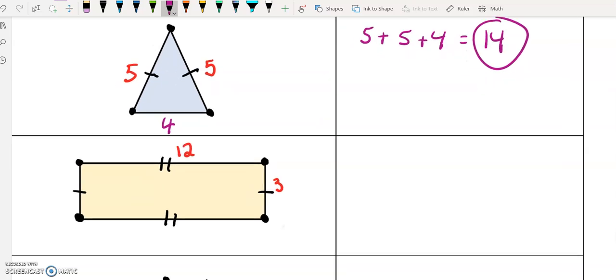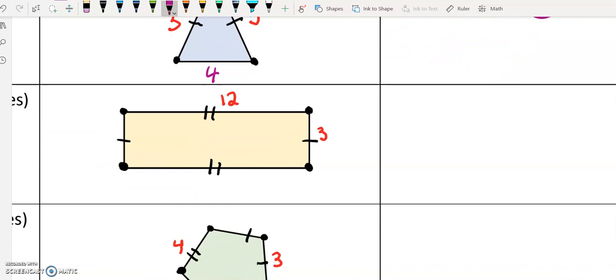Now, when you look at the rectangle given below, we know that this side right here is 12. We know that this side is three, but the other two sides are not labeled. That's a problem. In order to find the perimeter, we need to know all of the sides.